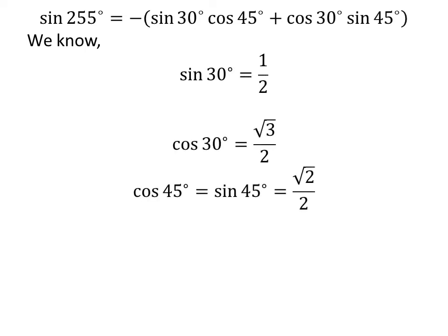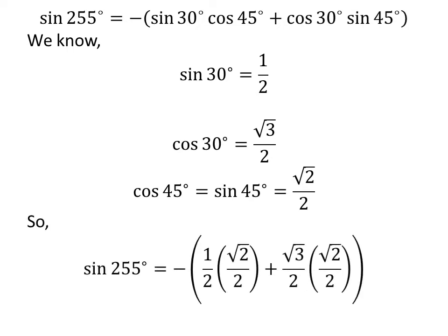As we know, sine of 30 degrees is equal to one half, cosine of 30 degrees is equal to square root of 3 over 2, and cosine of 45 degrees equals sine of 45 degrees equals square root of 2 over 2. Plugging in these values, we get: sine of 255 degrees is equal to minus one half times square root of 2 over 2 plus square root of 3 over 2 times square root of 2 over 2.